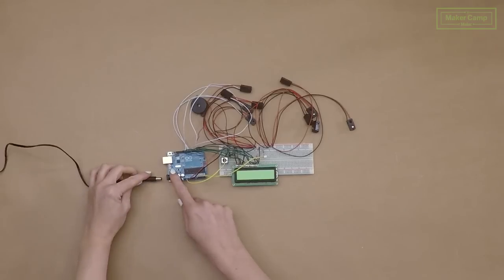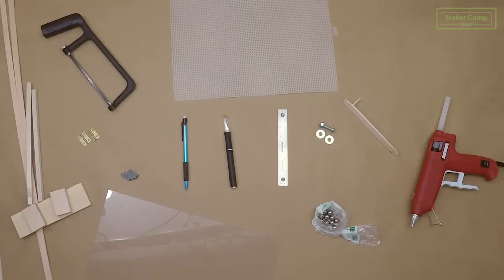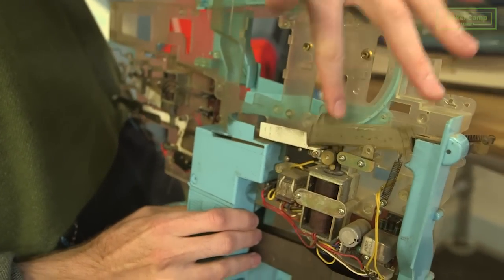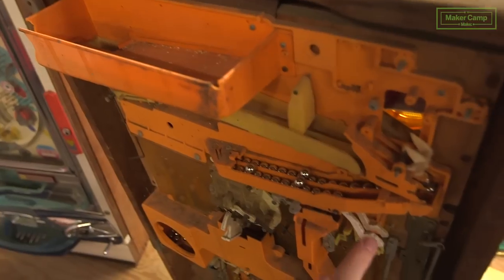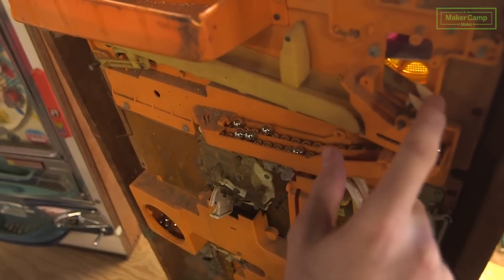Be sure to check out the project step-by-step PDF for a full list of the supplies that you'll need. But before we finish things up, let's take a quick trip to the Make Media Lab, where Matt Kelly will show us a couple of vintage pachinko machines that he's working hard to restore.